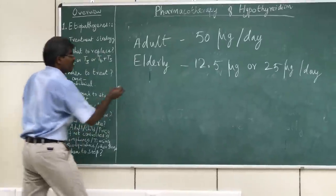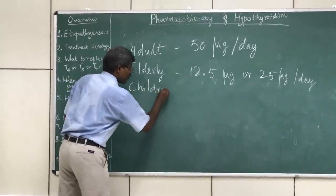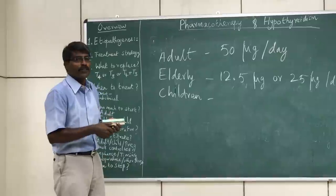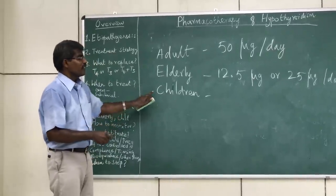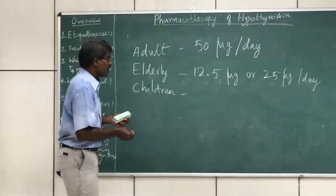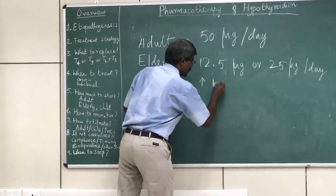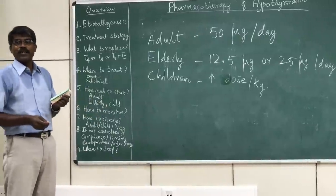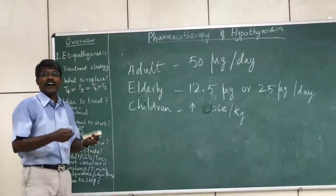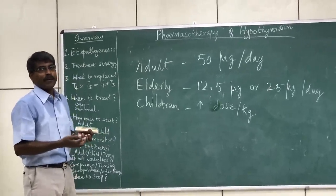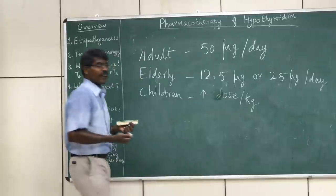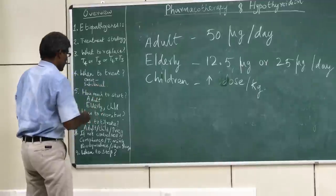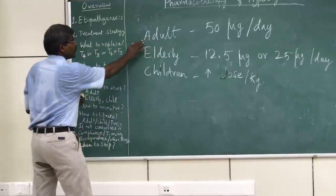In children, there is a paradoxical situation. For most drugs, the dose per kilogram body weight for children is usually lower than in adults, but for levothyroxine treatment of hypothyroidism, children require a higher dose per kilogram body weight. This is because thyroid hormone is involved in growth and differentiation, children are in an active growth stage, and their metabolic rate is also high — so they need more thyroid hormone.